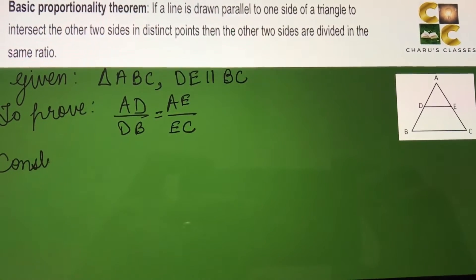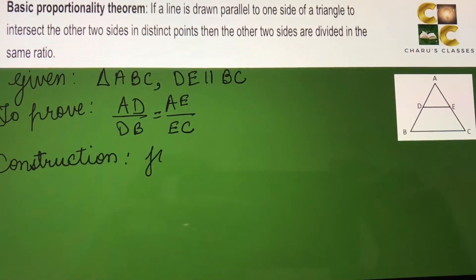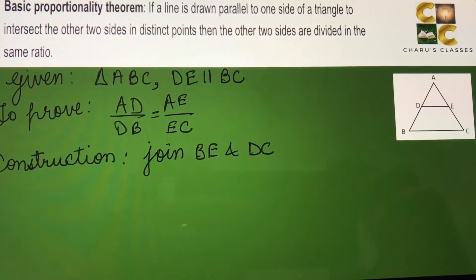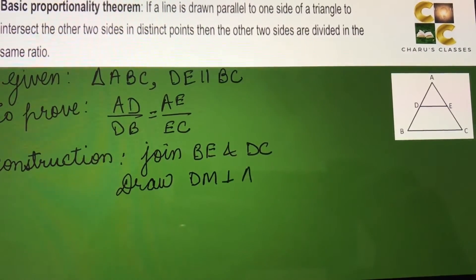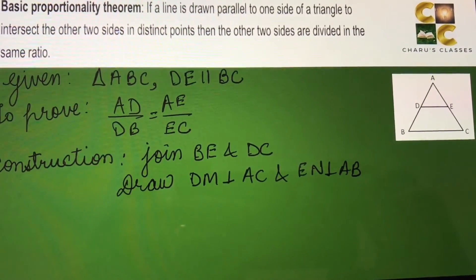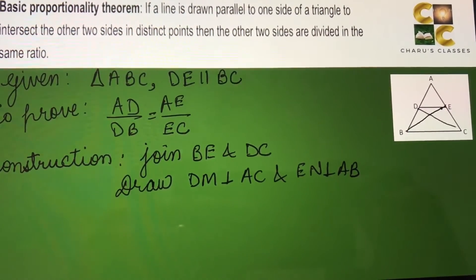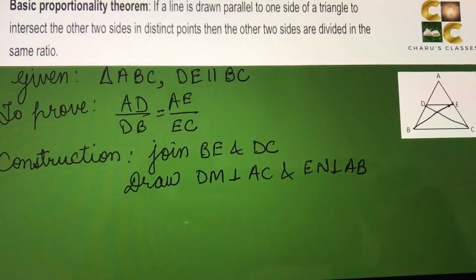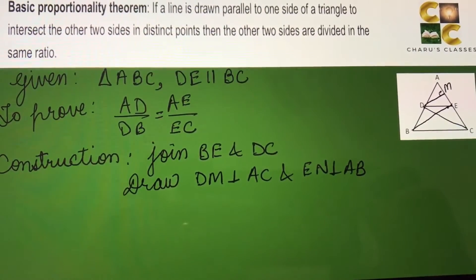To prove this we need to do some construction. Join BE and DC, and draw DM perpendicular to AC and EN perpendicular to AB. So here we are joining B to D, D to C, and we are making perpendiculars. DM is perpendicular to AC, going like this, and EN is perpendicular to AB.